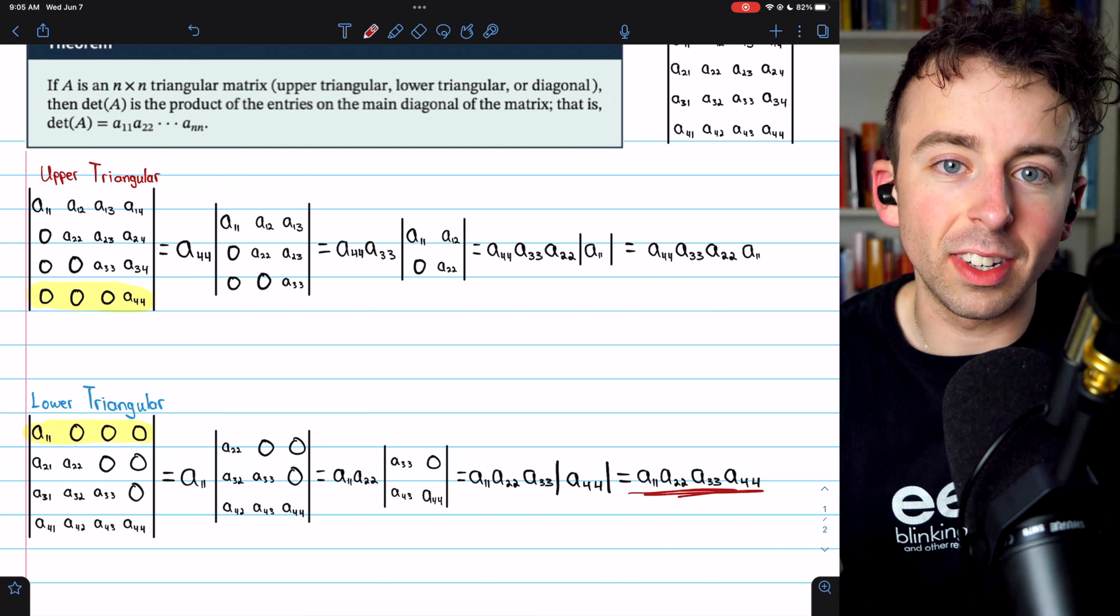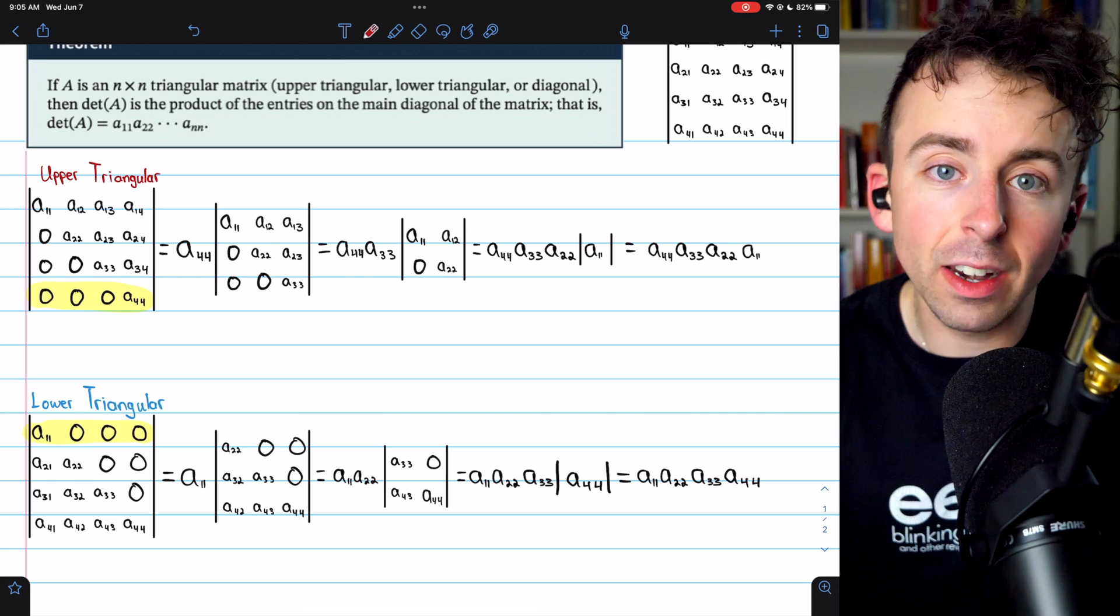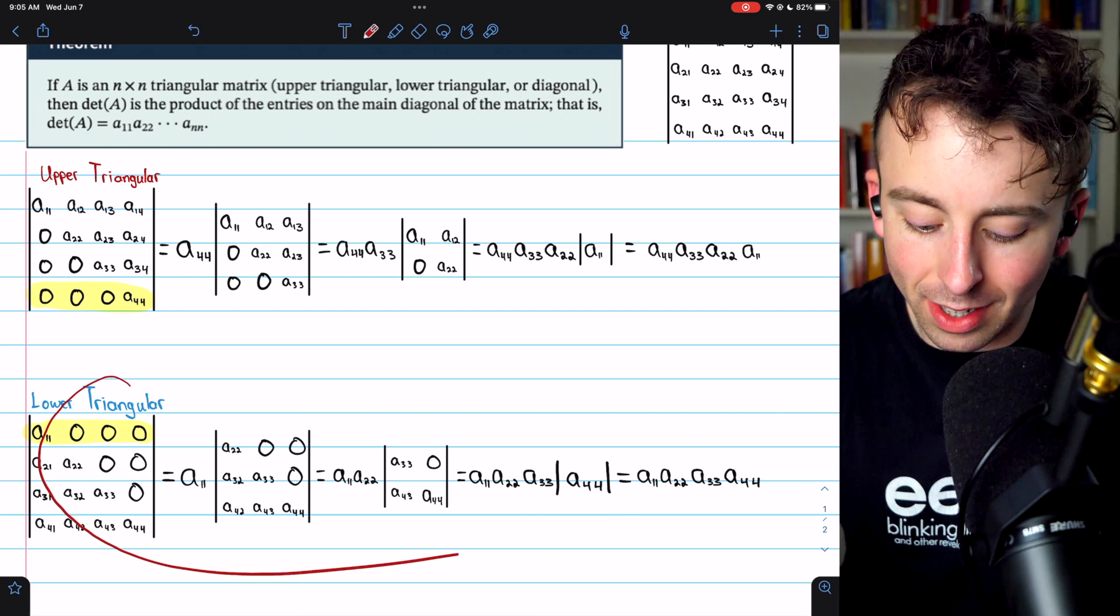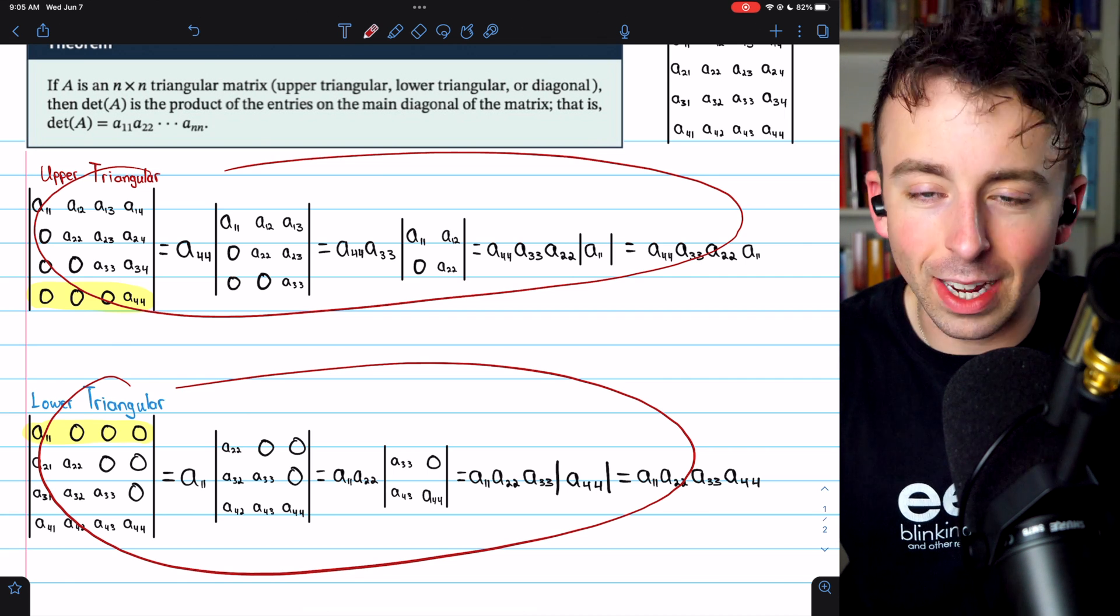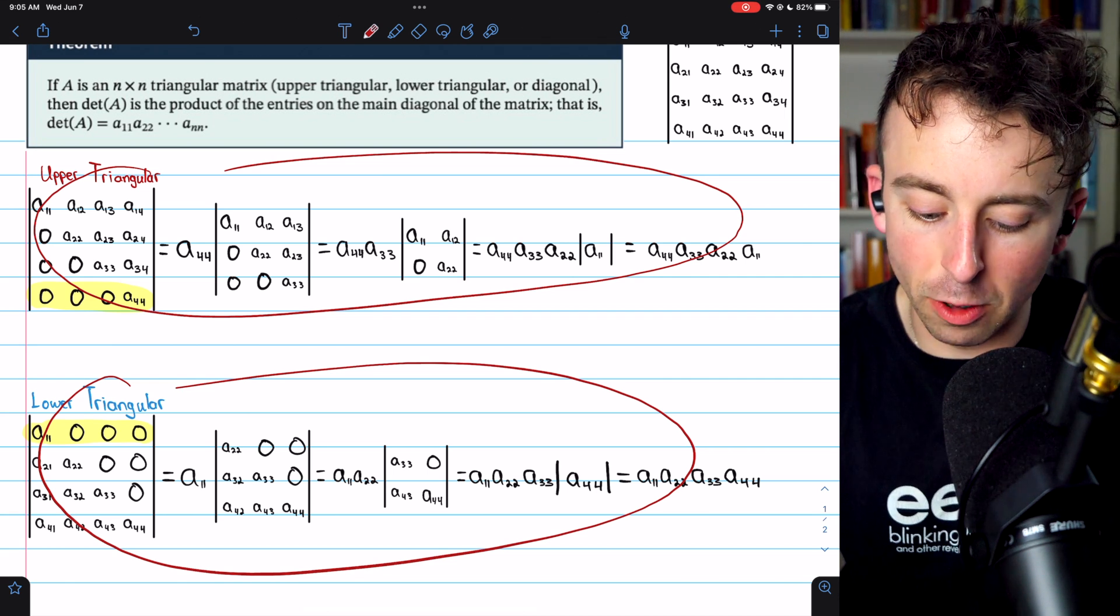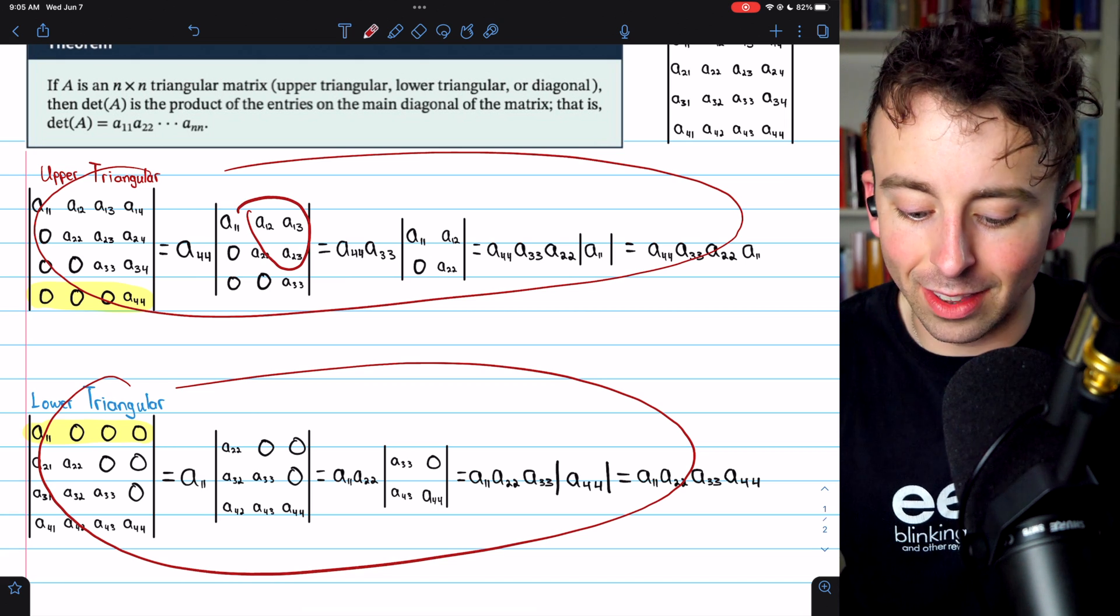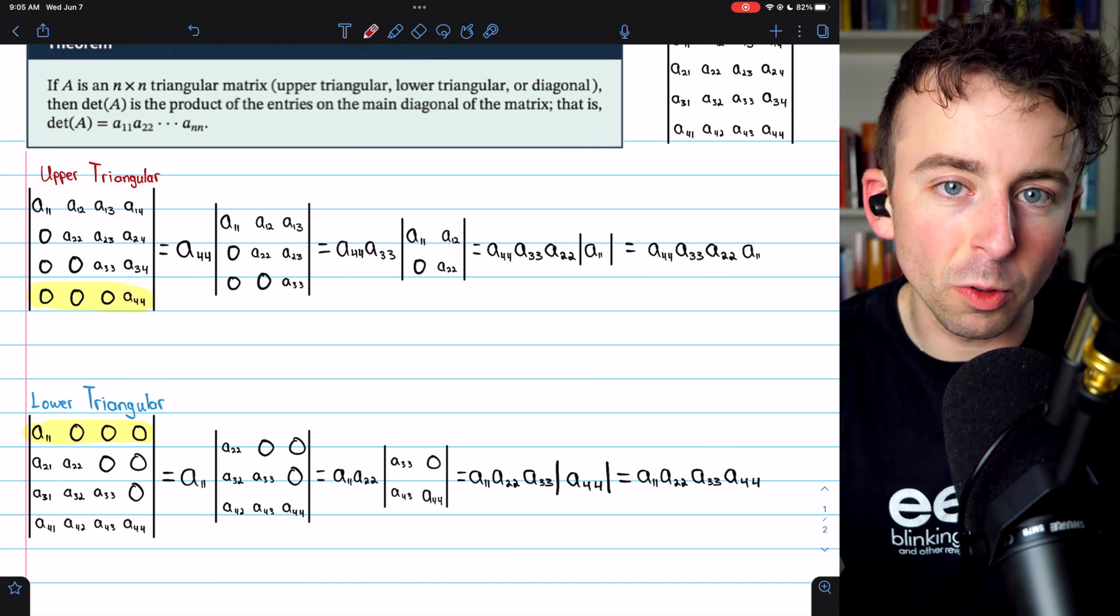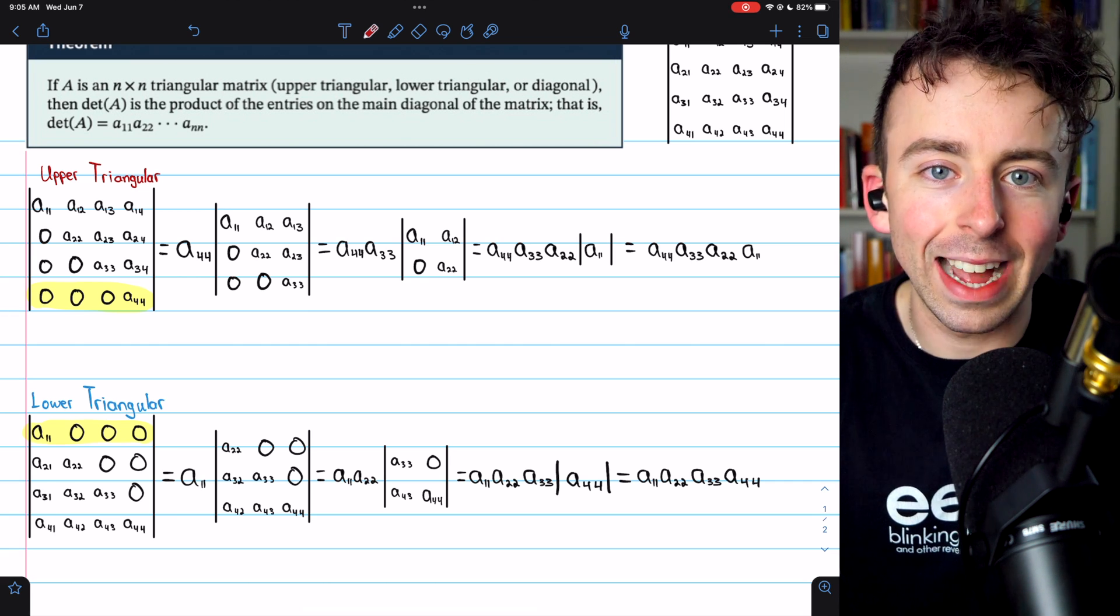So if we consider just a diagonal matrix that has zeros outside of the diagonal, well, the computation is still going to be the same as these because the only entries that affect the computation are those on the diagonal. So if we turn everything else to zeros to make it just a diagonal matrix, well, we're still going to get the same thing. So for a diagonal matrix, this still applies. Its determinant is just the product of the entries on the main diagonal.